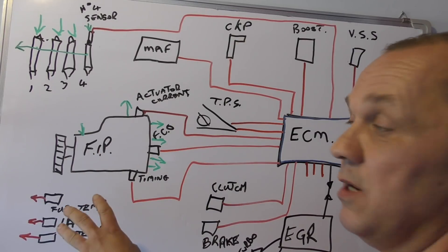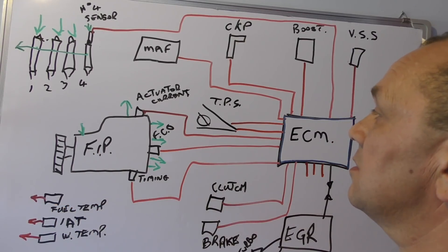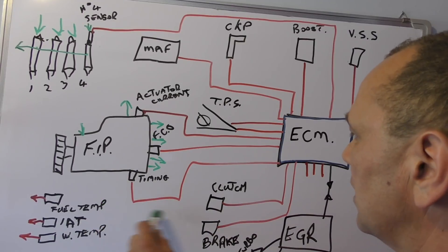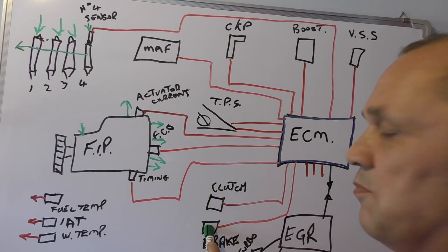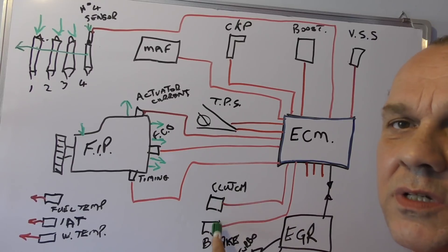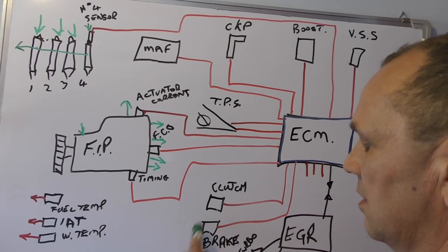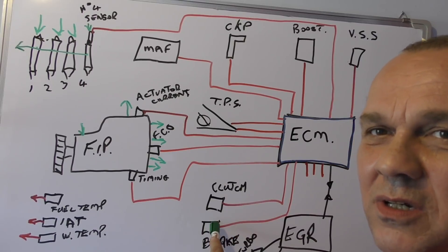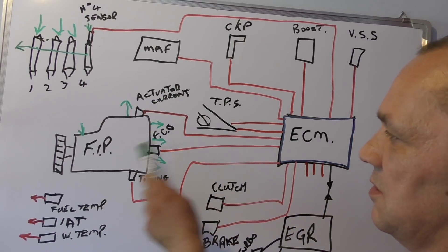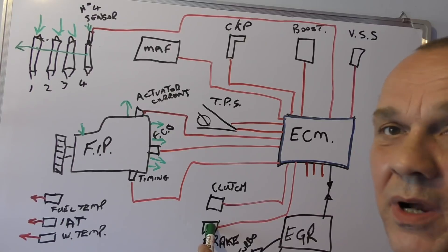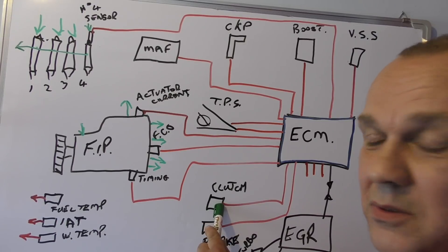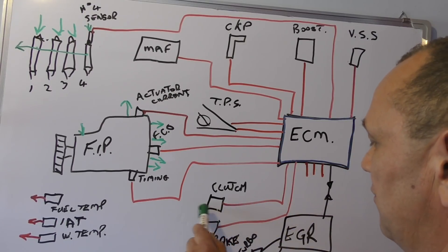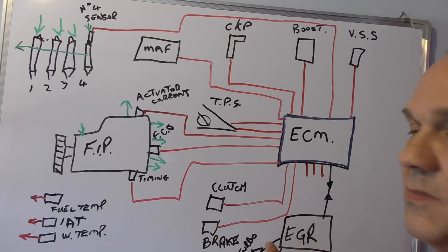Right, so you also have clutch and brake. I don't know if you can see them down there. You have clutch and brake sensors, and this will actually adjust the RPM depending on whether you're braking or changing gear, alright? So it needs to know that information.